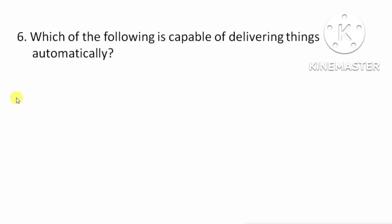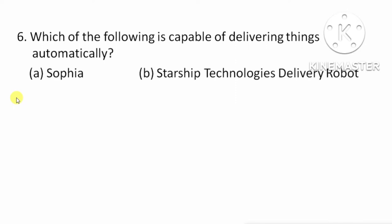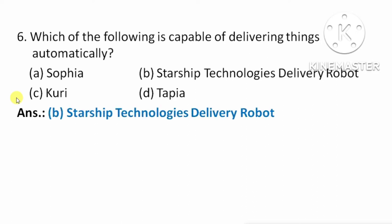Next question: which of the following is capable of delivering things automatically? Means, इनमें से कौन वस्तुओं को automatically deliver करने में सक्षम है? Option A: Sophia. Option B: Starship Technologies Delivery Robot. Option C: Koori. Option D: Tavia. The right answer is Option B, Starship Technologies Delivery Robot.